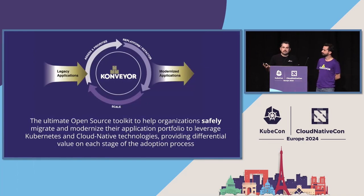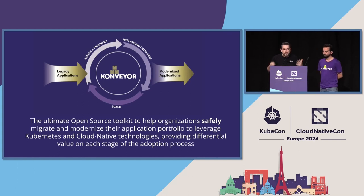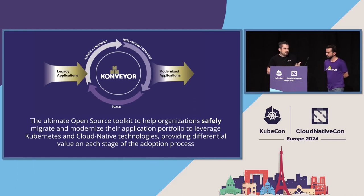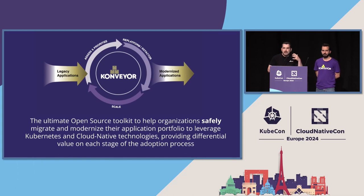So what is Conveyor? Conveyor is an open source project to help organizations with the onboarding of their traditional workloads into Kubernetes to leverage cloud-native technologies. Our approach is to provide as much insight as possible for the migration and modernization leads to make informed decisions, and for the developers performing the actual changes, provide some guidance and some degree of automation.